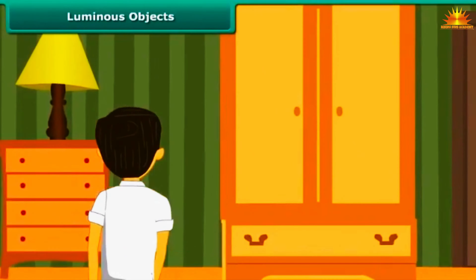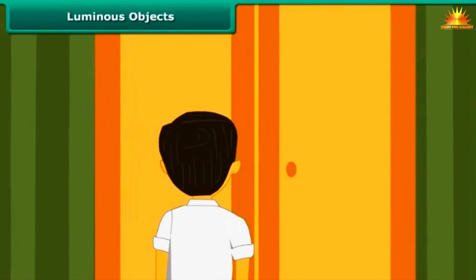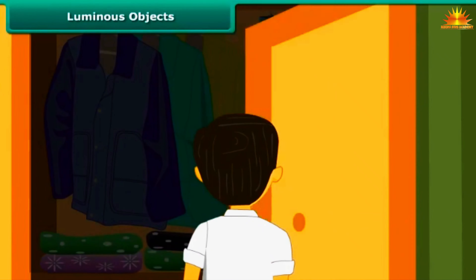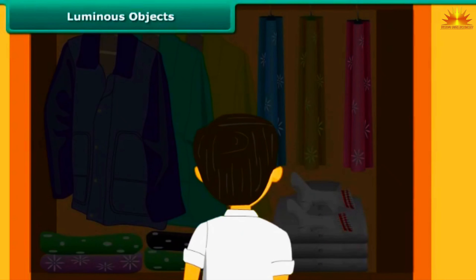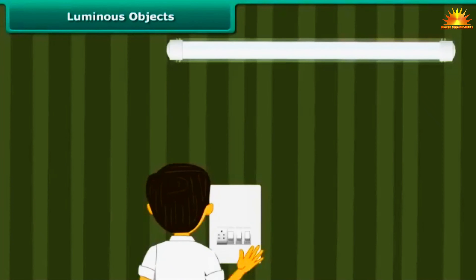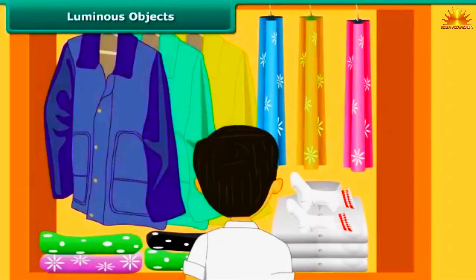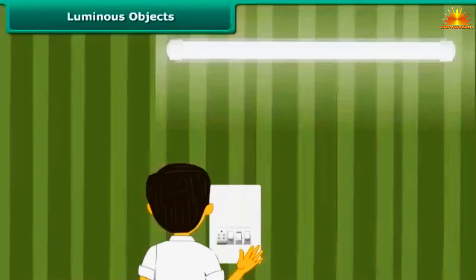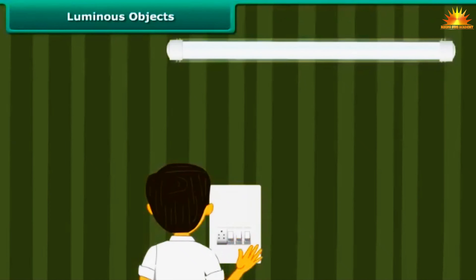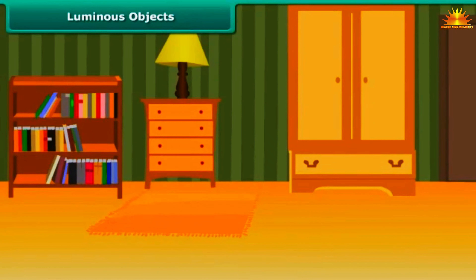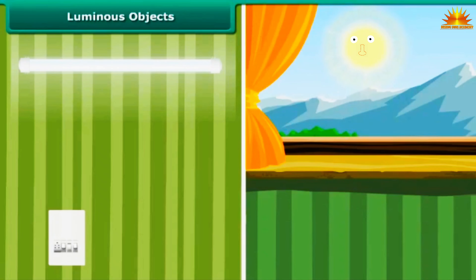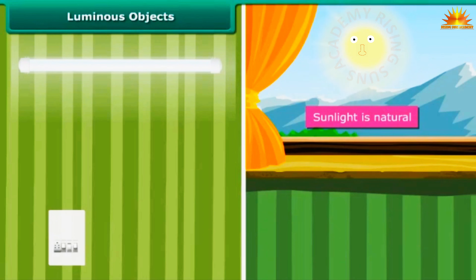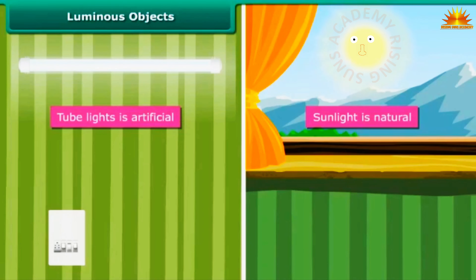You are getting late for school and are not able to find your socks. You search for them in the cupboard. Since the cupboard is dark, you switch the tube lights on. Once you locate the socks, you switch the lights off because there is sufficient daylight. We just talked about two types of light: the light from the tube lights and daylight, which is the light from the sun. While sunlight is natural, light from the tube lights is artificial.